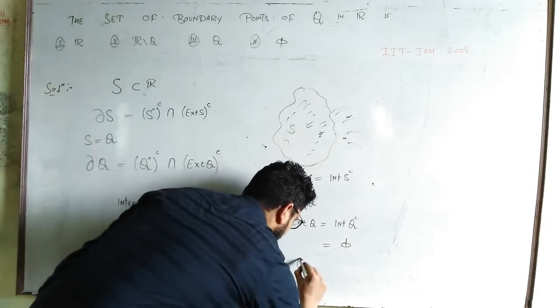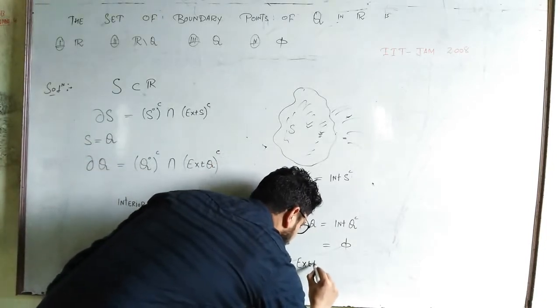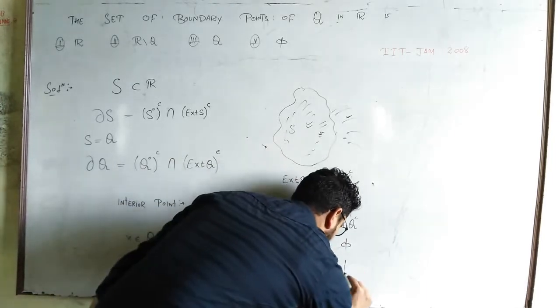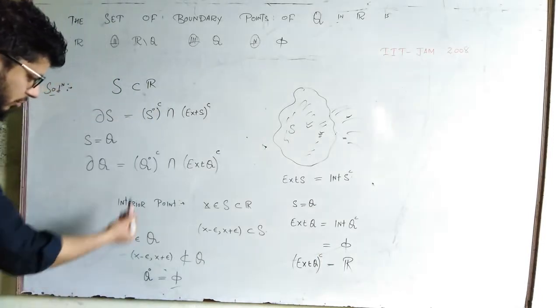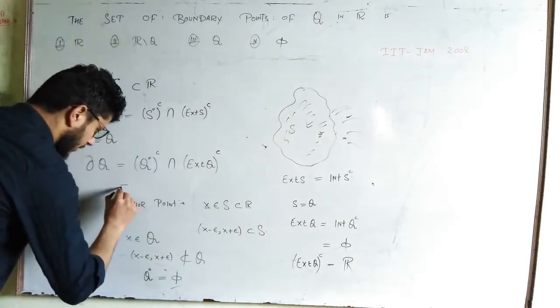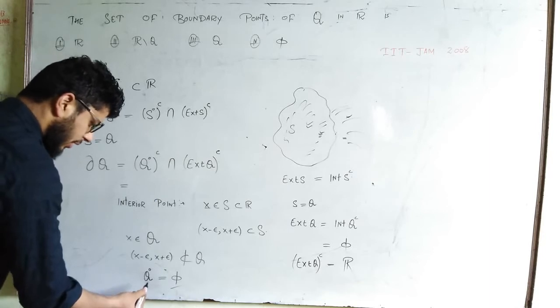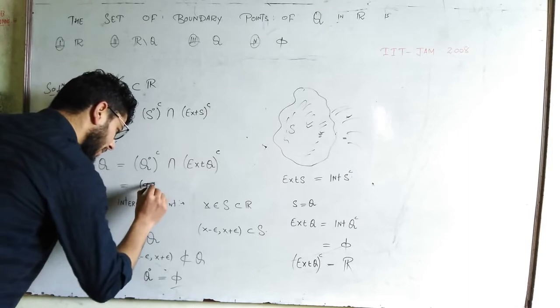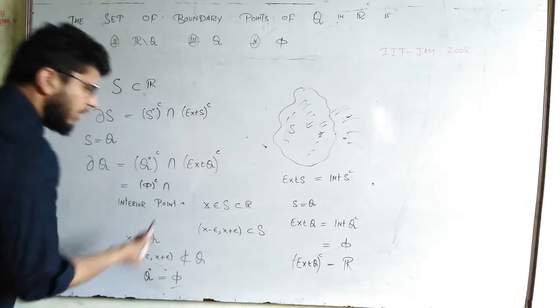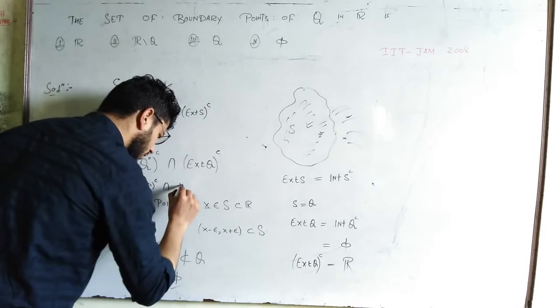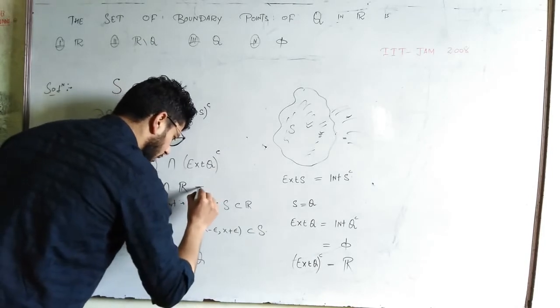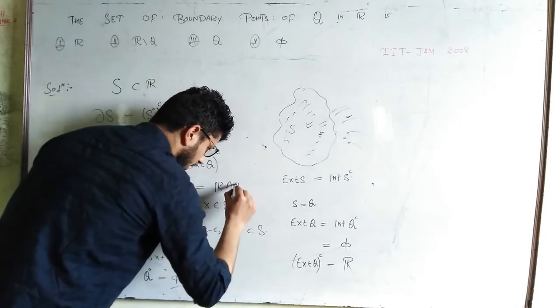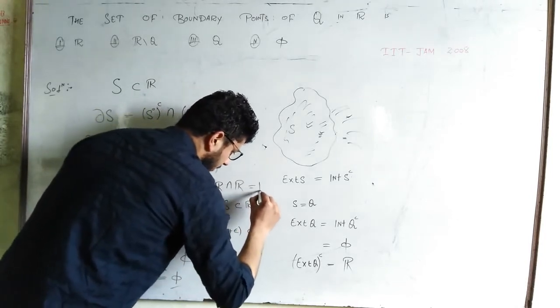Now you are supposed to find exterior of Q with complement. The moment you will apply complement to φ, you will get R. So this is reduced, we have just calculated this, it is φ, φ complement intersection exterior of Q complement that is R. Now what is this φ complement, that is R, intersection R again, so we get R.